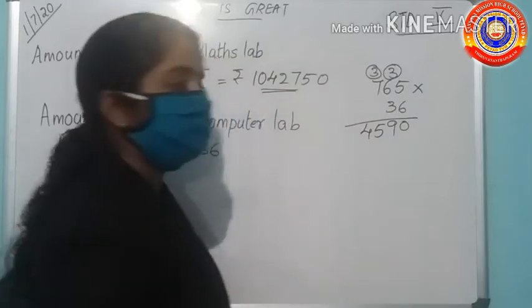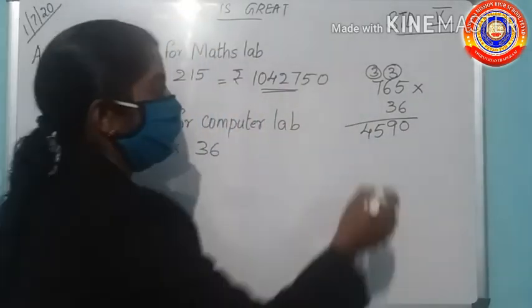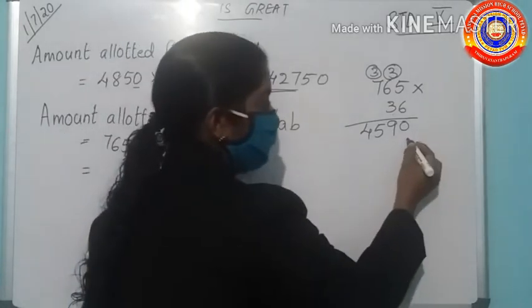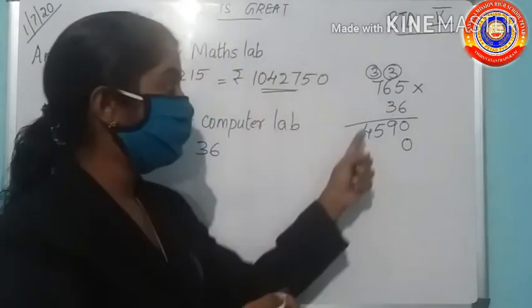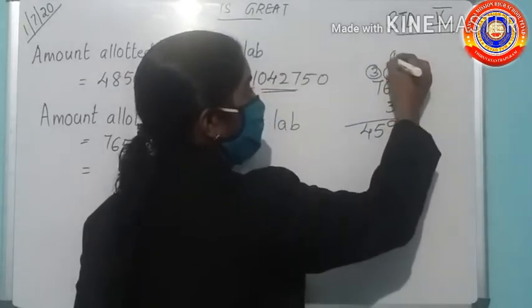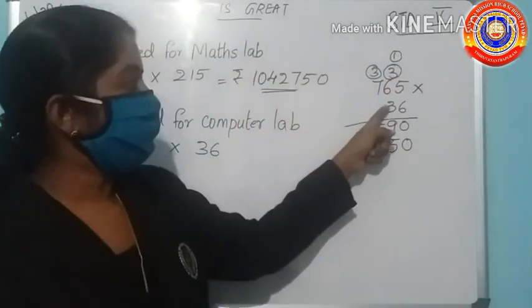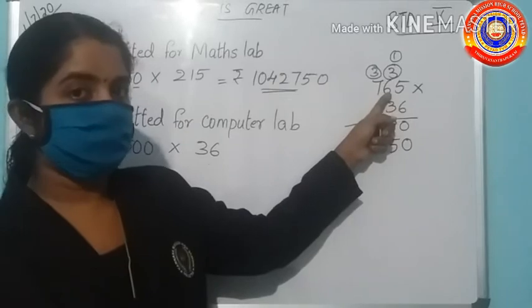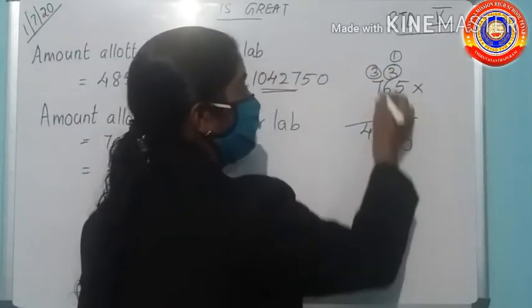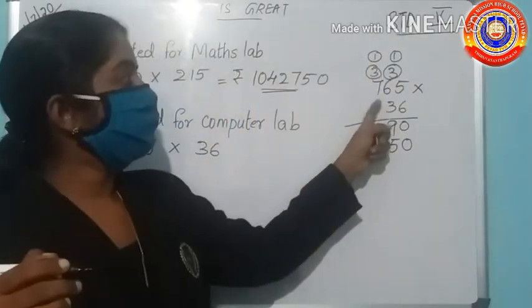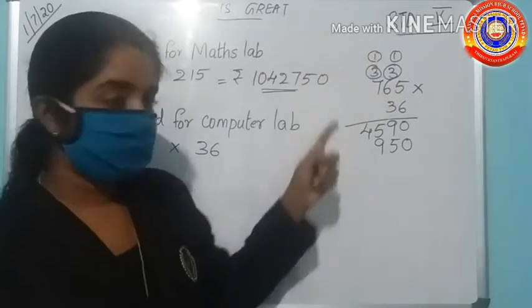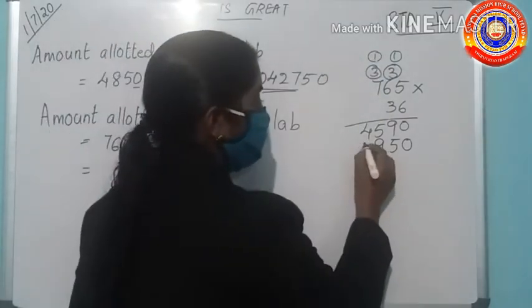Next, we have to multiply the number in the tens place. So write 0 in the ones place. Then 3 into 5, this is 15, 1 carry. Then 3 into 6 is 18, 18 plus 1 is 19, 9 carry over 1. Then 3 into 7 is 21, 21 plus 1 is 22. Write 22 here.